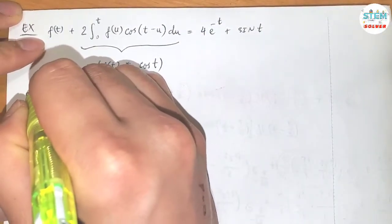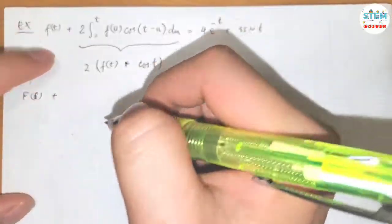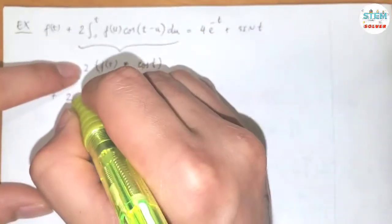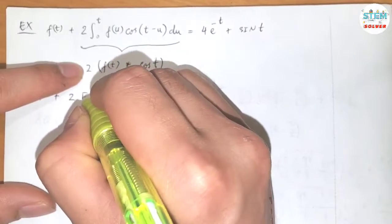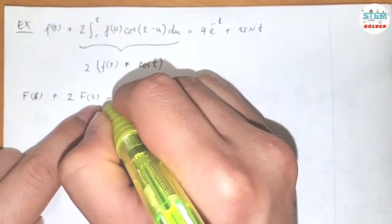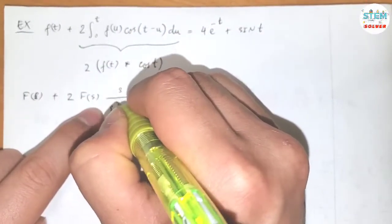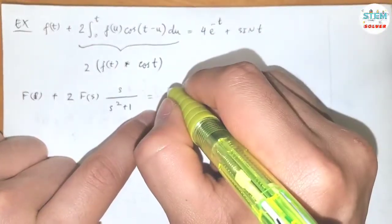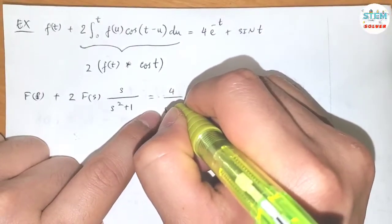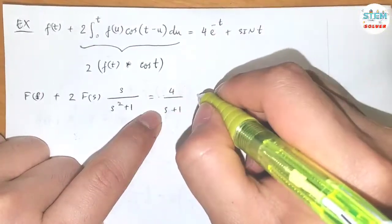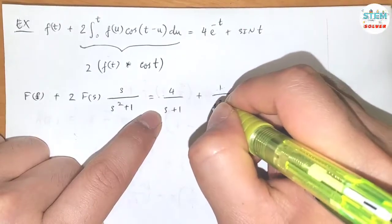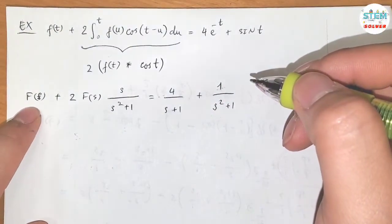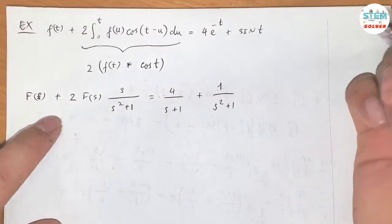On the left side I have F(s), capital F(s), plus the convolution part gives us 2 times capital F(s) times s over s² plus 1, equals 4 over s plus 1 plus 1 over s² plus 1.